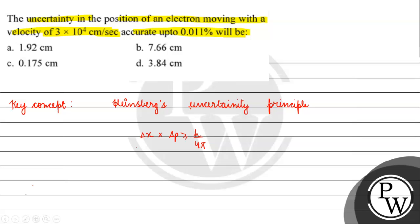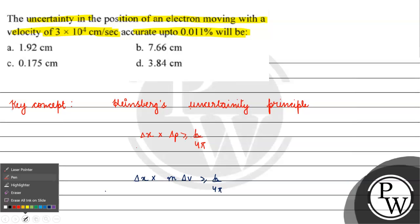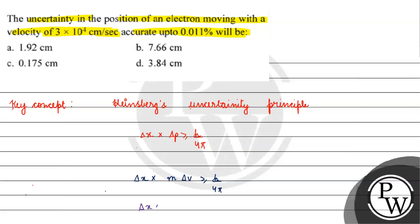Heisenberg's uncertainty principle gives us: Δx · Δp ≥ h/4π. Here, Δx is the uncertainty in position, and Δp is the uncertainty in momentum. This can also be written as Δx · m · Δv ≥ h/4π, since momentum equals mass times velocity.